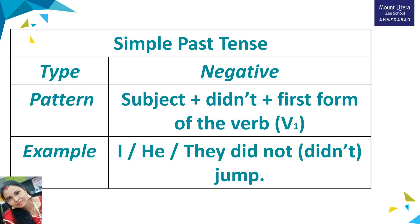For making negative sentences, we follow this pattern: subject plus 'didn't' or 'did not' plus the first form of the verb, that is the base form of the verb. For example, 'I / he / they did not jump' — we use the first form of the verb with 'did not' or 'didn't.'